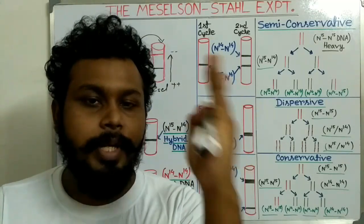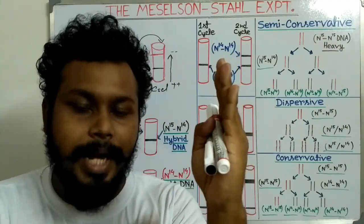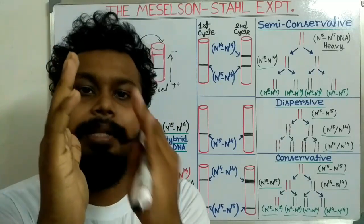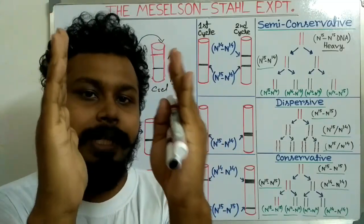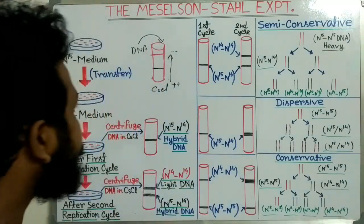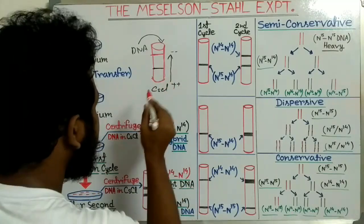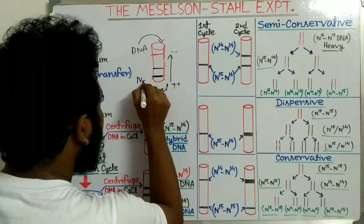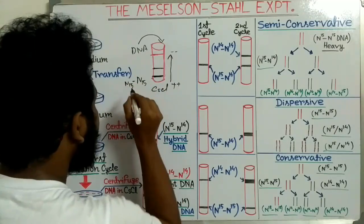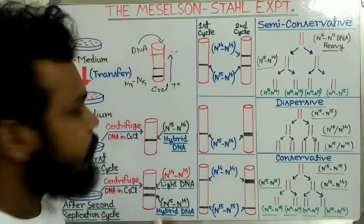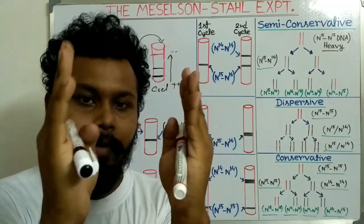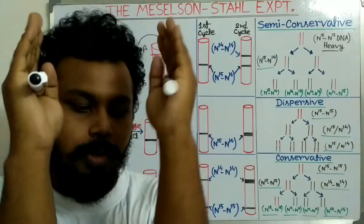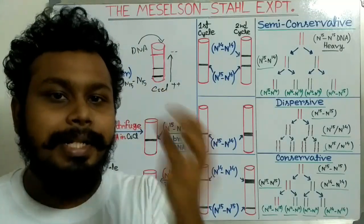They give bands at the bottom side. Suppose a DNA strand where all the DNA components contain N15, and its complementary DNA strand also has all components containing N15 — both strands contain N15 nitrogen. They are present at the bottom position, giving bands for the N15/N15 DNA strand. Now the DNA which contains N14 on both strands — all DNA components made up of N14 — has a lower density than the N15/N15 DNA strand.